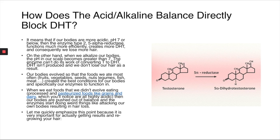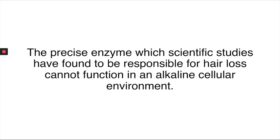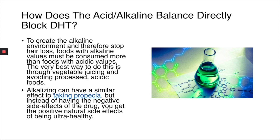It's very important to emphasize this point for actually getting results and regrowing your hair: the precise enzyme which scientific studies have found to be responsible for hair loss cannot function in an alkaline cellular environment. To create the alkaline environment and stop hair loss, foods with alkaline values must be consumed more than foods with acidic values — and the best way to do that is through vegetable juicing. Alkalizing can have a similar effect to taking Propecia, but instead of negative drug side effects you get the positive natural side effects of being ultra healthy.